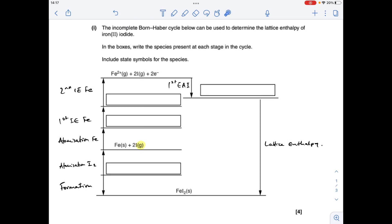Okay, so the first thing I'm going to do is write the species present at each stage in the cycle. You'll notice I've written up the names of each stage. So in this box here, we're going to have the elements. So that's Fe solid and I2 solid.